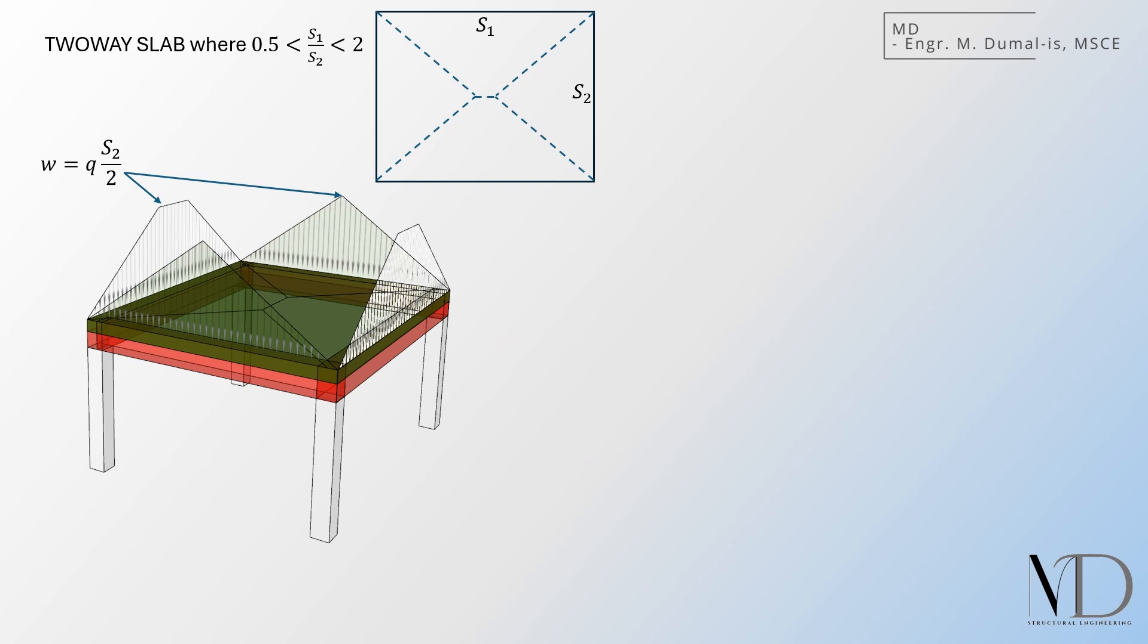Now, you might be thinking – trapezoidal and triangular loads aren't that bad. And you'd be right – if we only had to analyze a single beam. Software can handle it, and even manual calculations are manageable for a few members. But in a real structure, you have dozens, maybe hundreds of beams, all with varying load distributions. Suddenly, the complexity explodes. Imagine doing hand calculation for hundreds of beams with irregularly shaped loads. So what do we do?